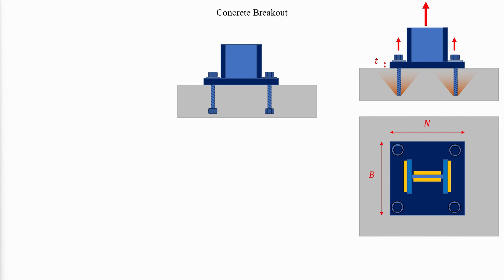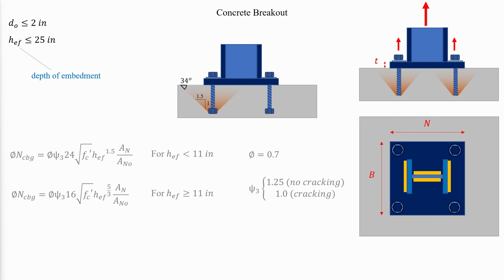In the concrete capacity design (CCD) method, the concrete cone is considered to be formed at an angle of approximately 34 degrees, or a slope of 1 to 1.5. The CCD method is valid for anchors with diameters not exceeding 2 inches and tensile embedment length not exceeding 25 inches in depth. Per ACI 318 Appendix D, the concrete breakout strength for a group of anchors is defined in terms of AN, the concrete breakout cone area for the group, and AN0, the concrete breakout cone area for a single anchor.